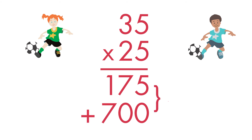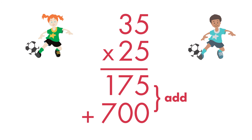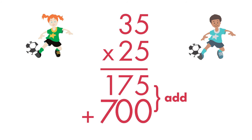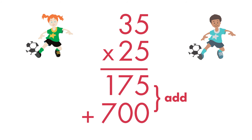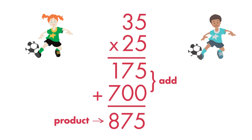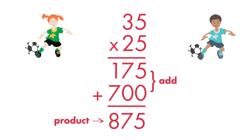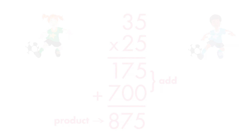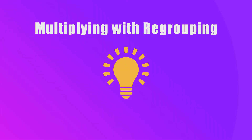Finally, add the 2 numbers together to find the product, or answer. 175 plus 700 is equal to 875. There are 875 players at the tournament. Now you know how to multiply numbers with regrouping. Great job!